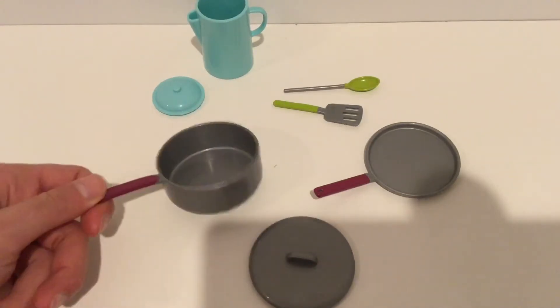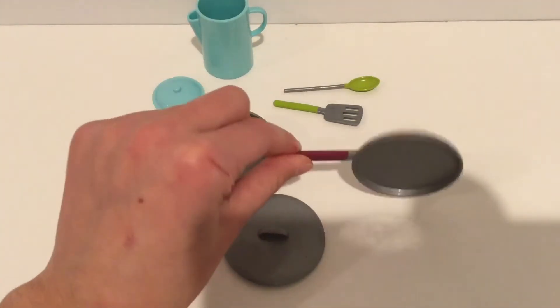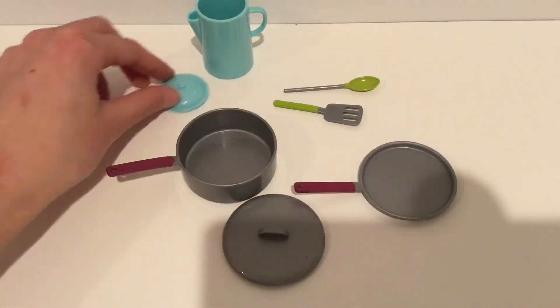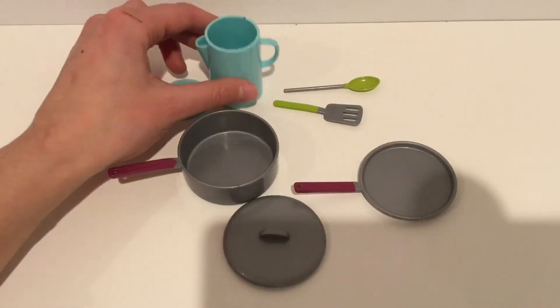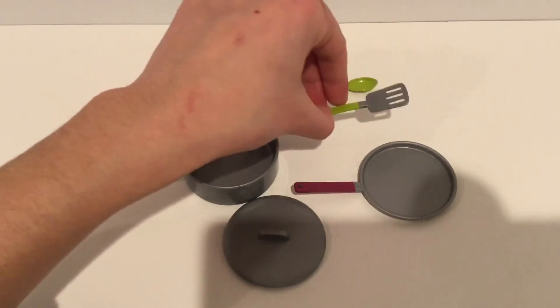So here's a pot that came with a lid, and then a little frying pan, and a water jug, and then a little mixing spoon and a spatula.